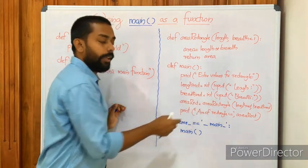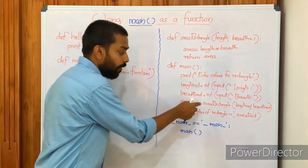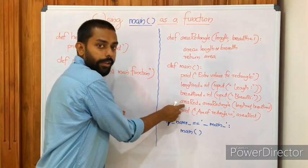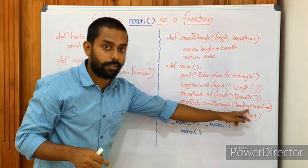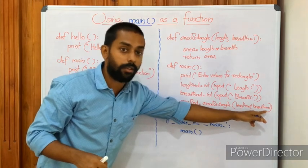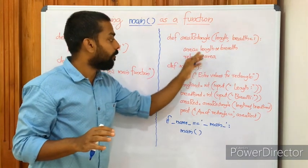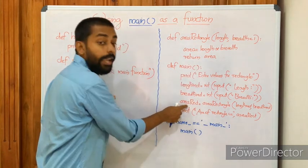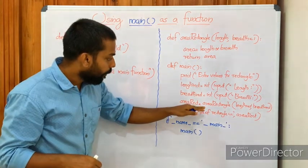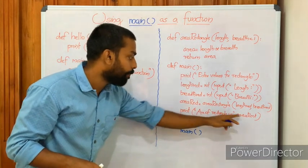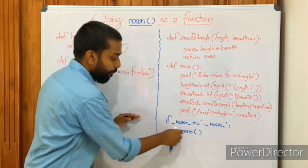Using those two input statements we initialize length_rect and breadth_rect with integer values. Then area_rect = area_rectangle(length_rect, breadth_rect) — this is the function calling statement. We pass two arguments, length_rect and breadth_rect, and assign the result to area_rect. At the time of calling, control passes to the definition: length gets the value of length_rect and breadth gets breadth_rect. If no value is passed for breadth, it takes default value 1. The returned area is assigned to area_rect and then printed.